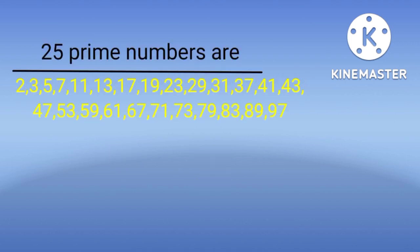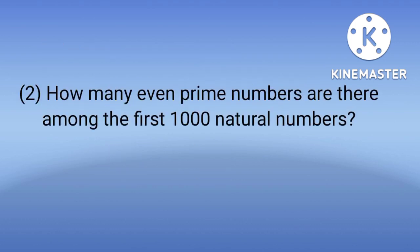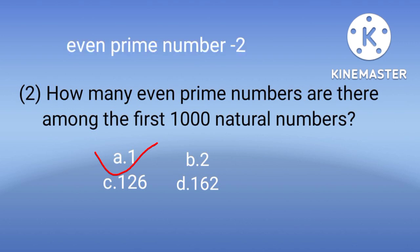These are the 25 prime numbers. Number 2: How many even prime numbers are there among the first 1000 natural numbers? Even prime numbers means sama bhajya sankhya. Options are 1, 2, 126 and 162. The answer is A, 1. Among the first 1000 natural numbers there is only one even prime number, which is 2, because 2 is the only prime number divisible by 2. All other prime numbers are not divisible by 2.